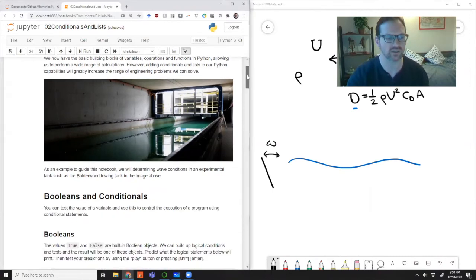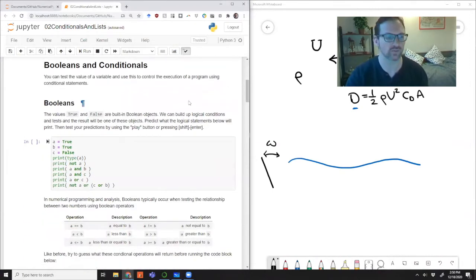But another feature of this particular towing tank is that we can use it to send waves down. So we can add waves to this tank. We do that by having a paddle on the end and oscillating that paddle back and forth with some frequency. And so we're going to use this as an engineering example to motivate the use of conditionals and lists.